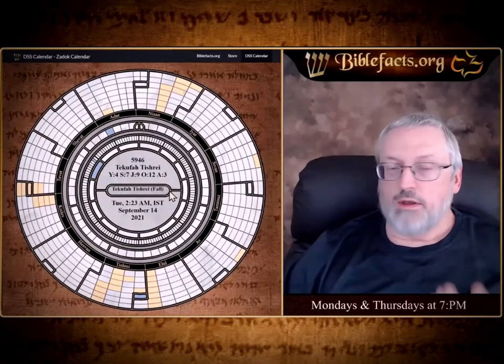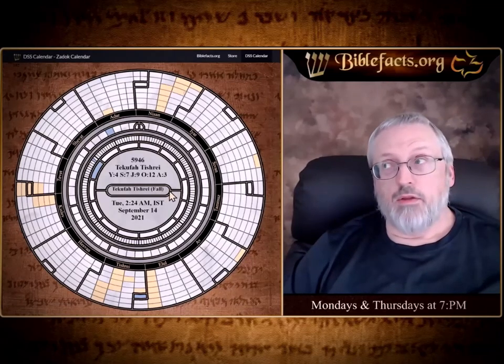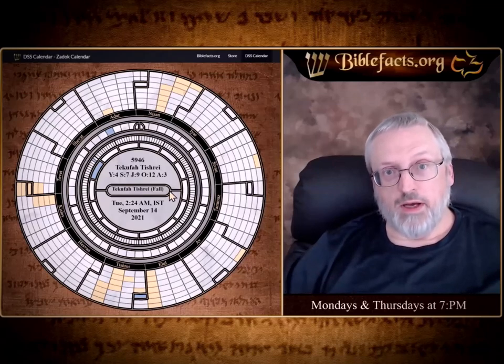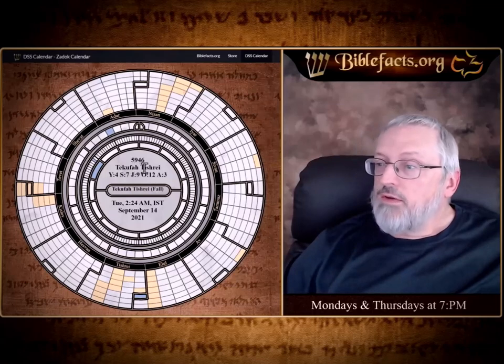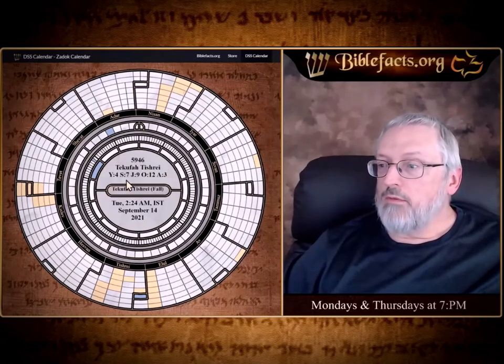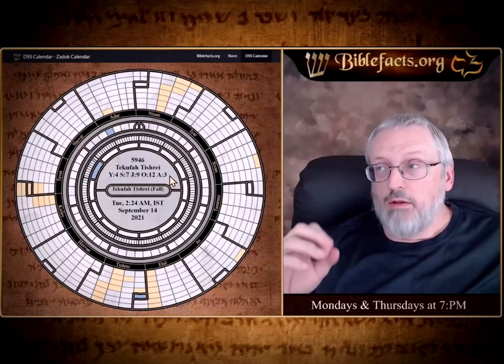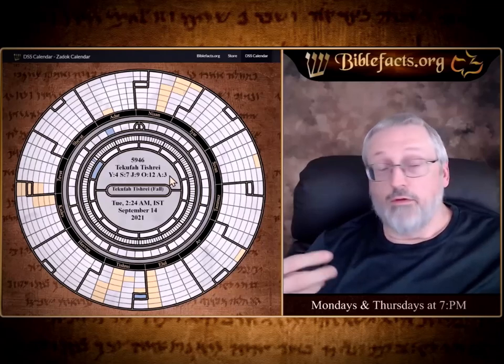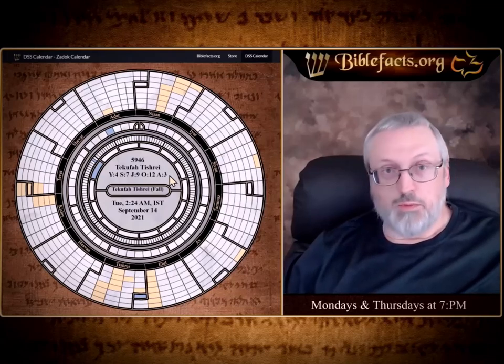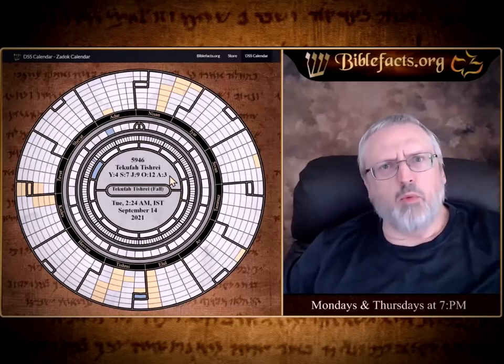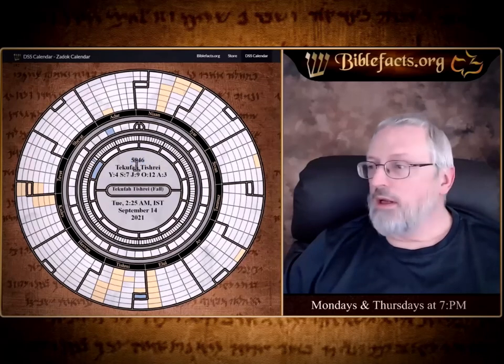It's 5946, Tekufa Tishrei — the fourth year of the seventh Shemitah of the ninth Jubilee of the twelfth Onah of the third age, according to their calendar. That sounds confusing, but it's like saying it's the first day of the first week of the first month of the first year of the first Shemitah of the first Jubilee of the first Onah of the first age — kind of like Roman numerals. It's easier just to say it's the year one at that time, or it's 5946.